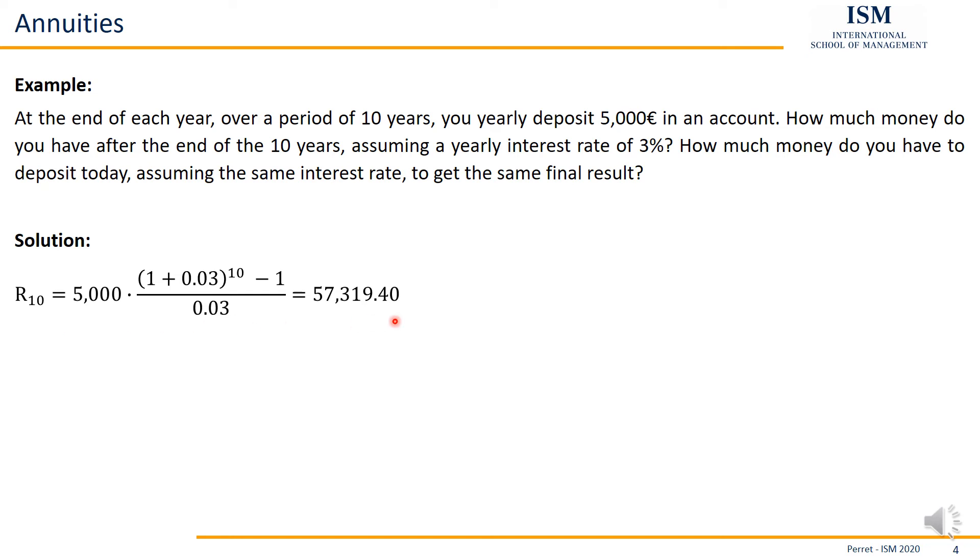Then we can take this final value, discount this back to the present, by dividing this by 1.03, so 1 plus the interest rate of 3%, to the power of N, N being 10. Now we get a value here of 42,651.02, so that's the amount of money I would have to deposit today, so that given these conditions, interest rate and periods, I will get the same result as if I were paying 5000 each year.